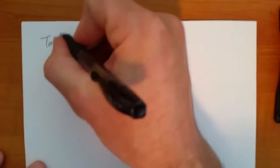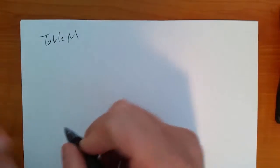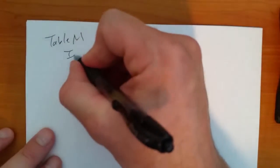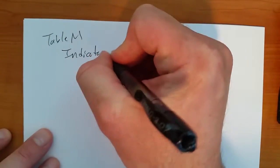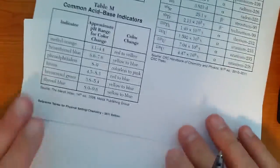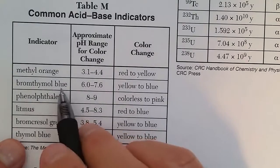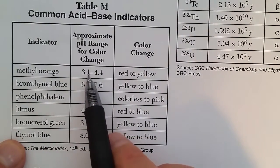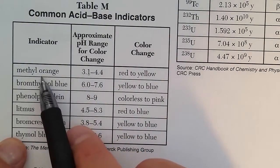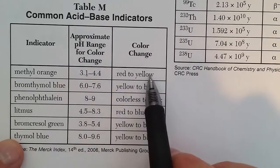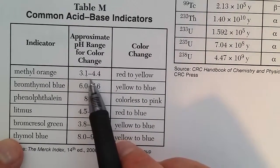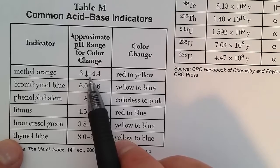Table M, the reference table is going to show common indicators for acids and bases. We look at table M, we see here methyl orange. If your pH is 3.1 or lower, it will be red. If it's 4.4 or greater, it will be yellow. In between, you'll get some sort of mixture.